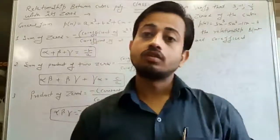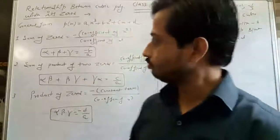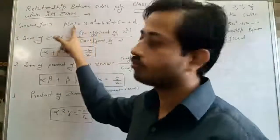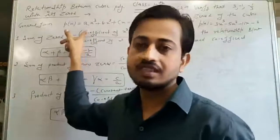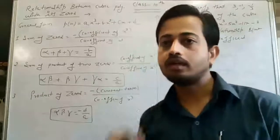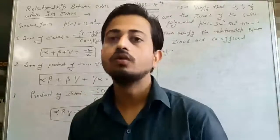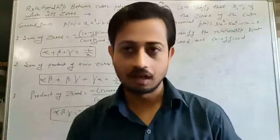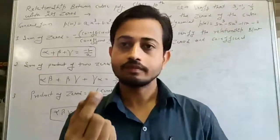We have to find out the relationship between the zeros and the coefficients of the polynomial. The general form of a cubic polynomial is AX³ plus BX² plus CX plus D. The highest power of X is 3, that is why it is called a cubic polynomial. The degree of the polynomial gives us the number of zeros — here degree is 3, so number of zeros is also 3. We represent these zeros as alpha, beta, and gamma.